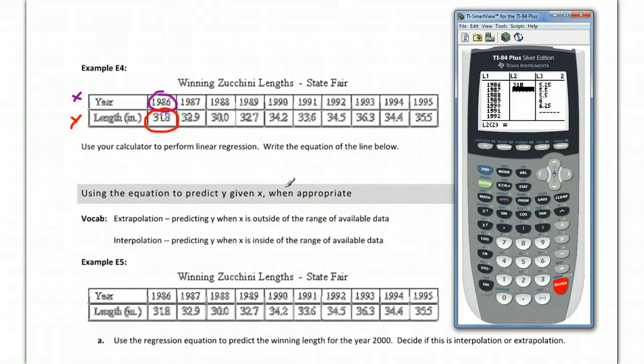329—oh, it looks like they've all got a decimal, so let's go ahead and make sure we correct that: 31.8, 32.9, 30.0. Apologize for the not as clear print there, and you'll go ahead and type these all in.